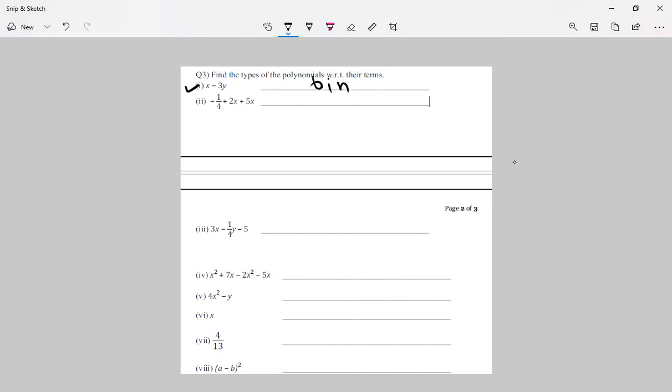Now see minus a, 1 upon 4x, 2x, and 5x. According to algebra it can be added. 5 plus 2 will be 7x. There will be again two terms, so again it's called binomial.